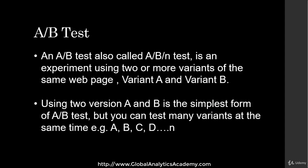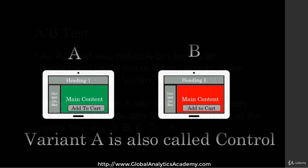A/B test, also called A/B/N test, is an experiment using two or more variants of the same web page — variant A, variant B, as well as variant C, D, E, F, etc. Using two versions, A and B, is the simplest form of A/B test, but you can test many variants at the same time.